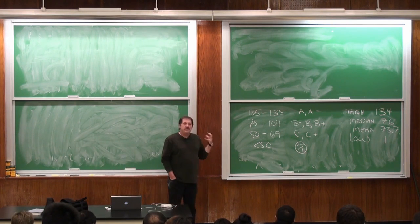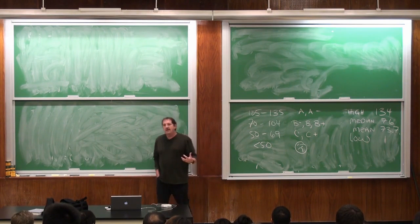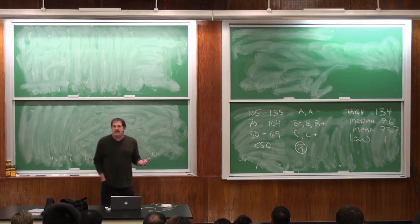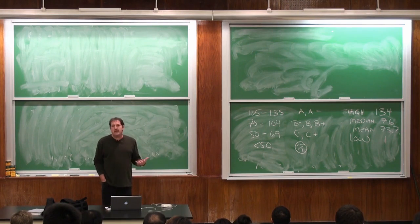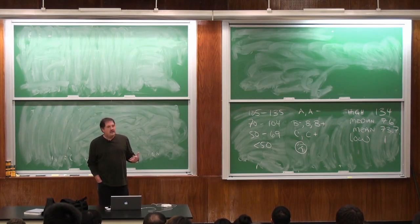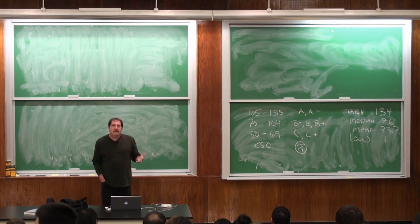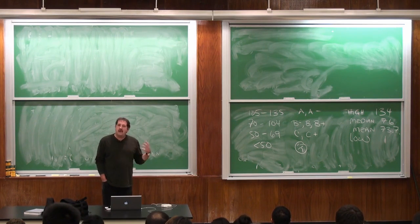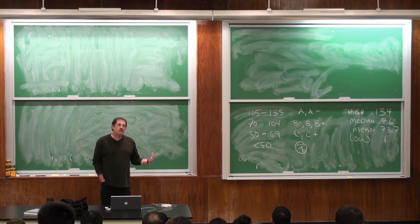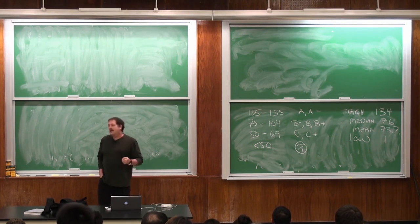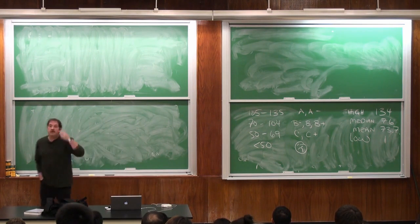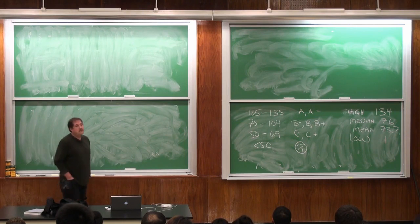I take each of the individual scores and put them on a standardized scale. Then I compute the weighted average, which means that the midterm counts towards 25% of the total, the final counts towards 35% of the total, and so on. That gives you a number, and that number is your grade.